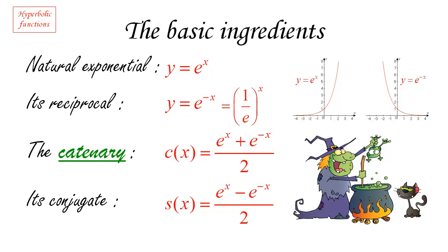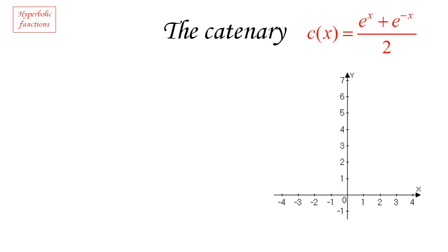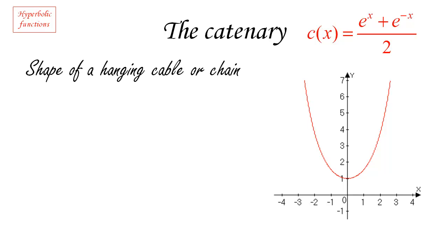Then we're going to consider its conjugate — the function s of x given by e to the power x minus e to the minus x over 2. That is just half of the distance between the natural exponential and its reciprocal. So two very simple basic ingredients and a very simple recipe. Now why do we call this thing a catenary? Because this is exactly the shape of a hanging cable or chain. If you suspend a chain or rope between two points, the shape it takes is the catenary. That can be proved using physics and the laws of gravity.